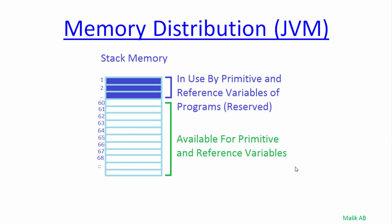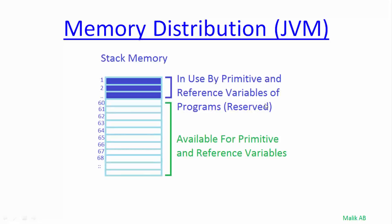As you can see, we have a stack memory and this blue portion holds data of primitive variables and reference variables — we will talk about reference variables in our upcoming lectures. This portion is available and it can be allocated to values of primitive data types.